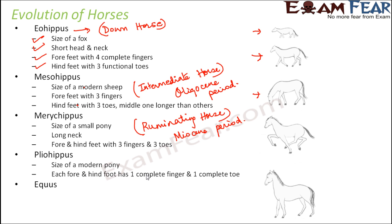Thereafter came Pliohippus, which was of the size of a modern pony. Each fore and hind foot has one complete finger and one complete toe. Earlier, each foot had three or even four fingers and toes, but now all of them were reduced to one finger and one toe. So Pliohippus was the first one-fingered, one-toed horse. It was also called the Pliocene horse because it was found during the Pliocene period.